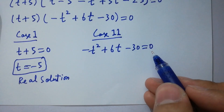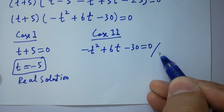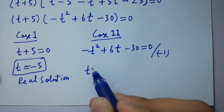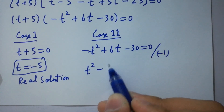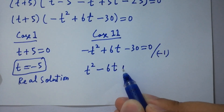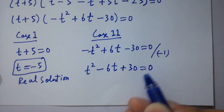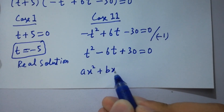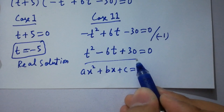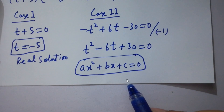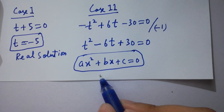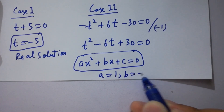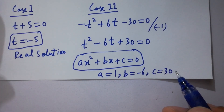For Case 2, to solve this we first divide by minus 1 on both sides, giving us t squared minus 6t plus 30 equals 0, which is a quadratic equation of the form ax squared plus bx plus c equals 0. By comparing, we have a equals 1, b equals minus 6, and c equals 30.